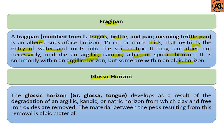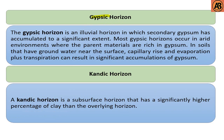The next one is the glossic horizon. The glossic horizon develops as a result of the degradation of an argillic, kandic, or natric horizon from which clay and free iron oxides are removed. The material between the degradation features resulting from this removal is albic material.